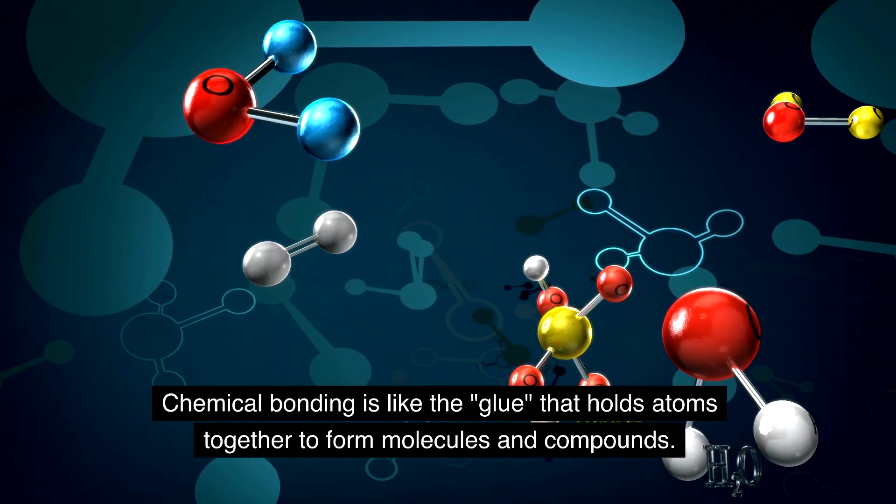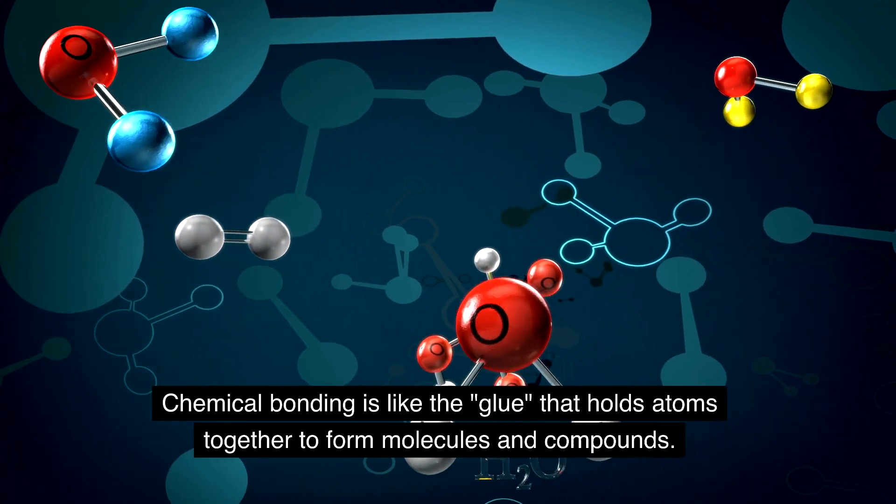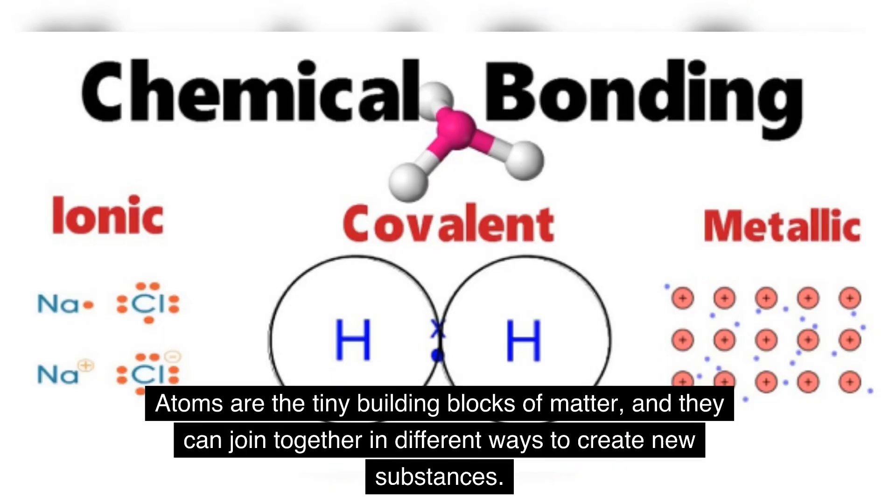Chemical bonding is like the glue that holds atoms together to form molecules and compounds. Atoms are the tiny building blocks of matter, and they can join together in different ways to create new substances.